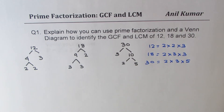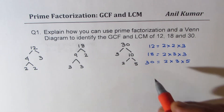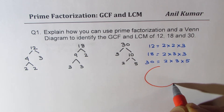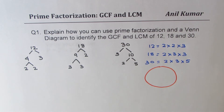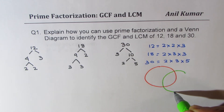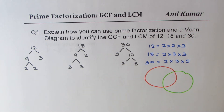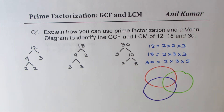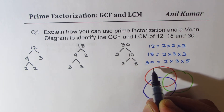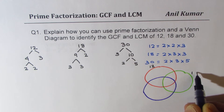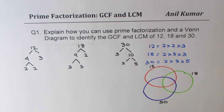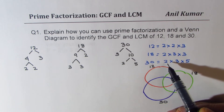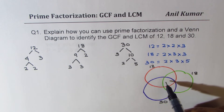Now we need to make a Venn diagram for the factors of these three numbers. Let me make three circles — one for 12, one for 18, and one for 30. Whatever is common between all three will come in the overlapping center region. One factor of 2 is common to all three, so we place one 2 in the center.